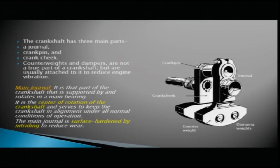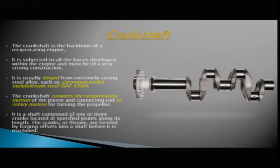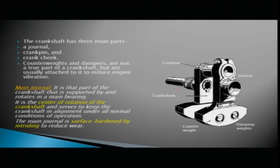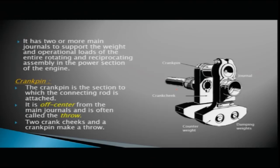The main journals are supported in the main bearing, rotate in the main bearing, and are the center of rotation of the crankshaft. They keep the crankshaft in alignment under all normal conditions of operation and are surface hardened by nitriding. There may be two or more journals to support the weight and operational loads of the entire rotating assembly.